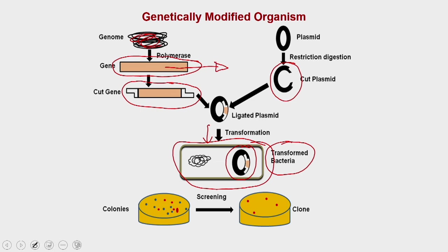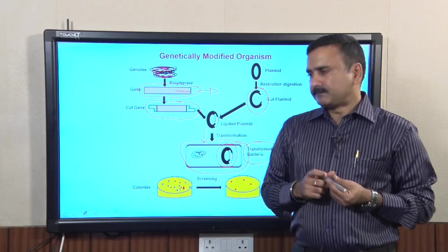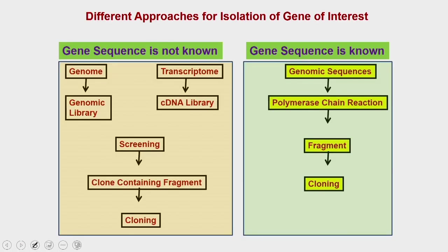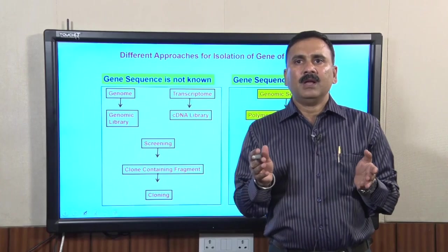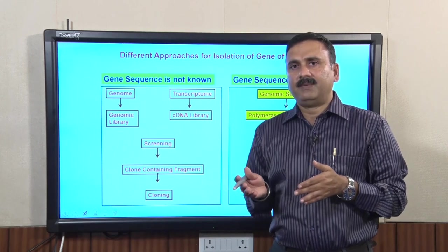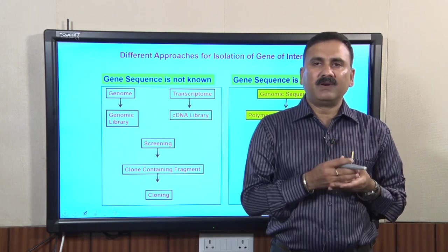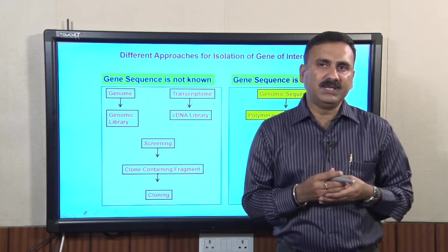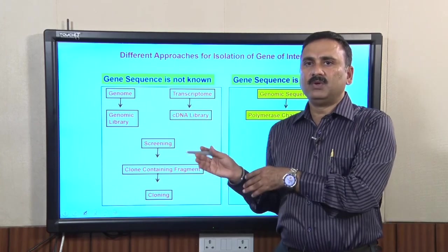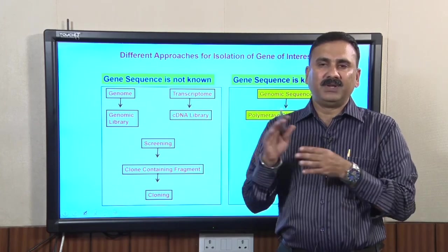In today's lecture, we are going to study how to isolate a particular gene and what different approaches can be used under different scenarios. Broadly in biological science there are two scenarios: before genomic sequences were available, people used different approaches; and there are different approaches used when genomic sequences are available.